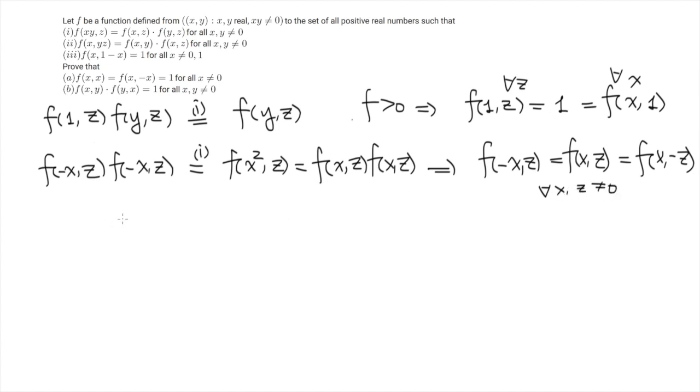Then now we are going to use the third identity. So we have f of x, 1 minus x equals 1 for any x. And we know that f of 1, z equals 1 for any z. So let's multiply by 1 over x and then we get 1. So if I multiply by f of 1 over x, 1 minus x, this gives f of 1, 1 minus x.